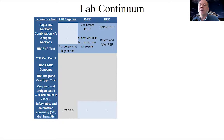For people coming in wanting post-exposure prophylaxis, it's similar. We want to get the HIV antibody test rapid, if possible, before the PEP, and then get the combo test or an RNA test before starting PEP, if possible. You don't need to wait for those results. Co-infection screening is also important.